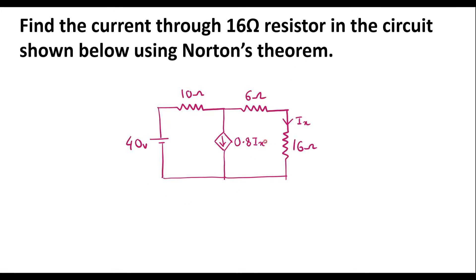This is the given circuit. Here we can see a 16 ohm resistor, and we are supposed to find the current through it — that is IX — using Norton's theorem. This circuit consists of independent sources as well as dependent sources: a 40 volt independent voltage source and a 0.8·IX current-dependent current source.